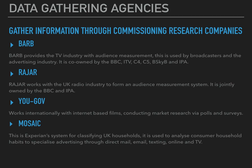You've also got RAJAR, which works with the UK radio industry to form an audience measurement system — same as BARB really, but for radio. It's jointly owned by the BBC and IPA. YouGov works internationally with internet-based films and TV, and they conduct research via polls and surveys. And Mosaic is Experian's system for classifying UK households. It's used to analyse customer household habits and helps to specialise advertising through direct mail, emailing, texting, online, and TV.